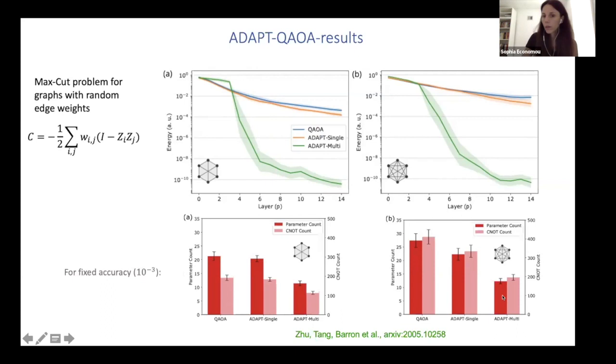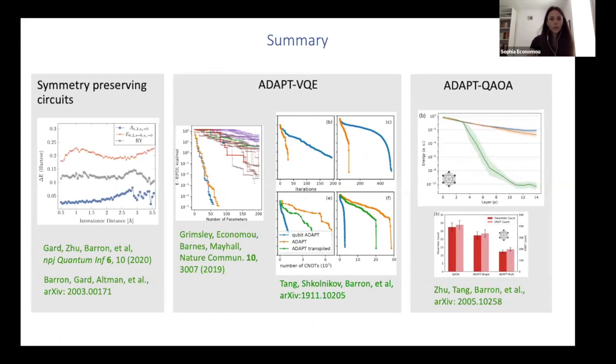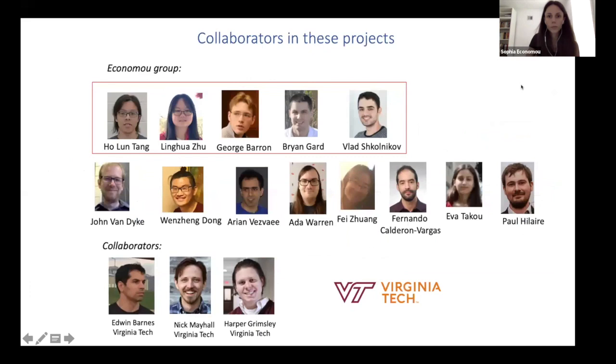So we think this is a very promising approach for optimization as well. All right. So to summarize, I discussed our work on tailoring ansatz to different Hamiltonians. So first you can impose symmetries and symmetry preserving circuits. And then there's the algorithm we call ADAPT, which I showed you a VQE incarnation, meaning a general Hamiltonian with off diagonal terms, as well as a QAOA incarnation, where the Hamiltonian's diagonal. So with that, I'll just leave the slide to acknowledge my students and postdocs who did this work and thank you for your attention.